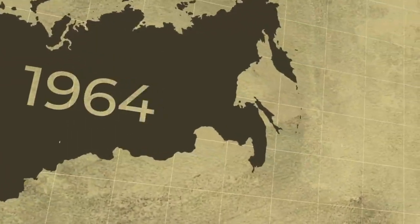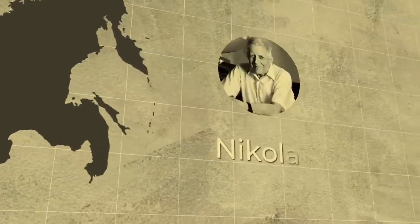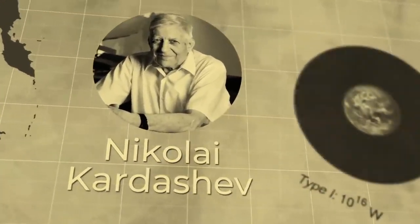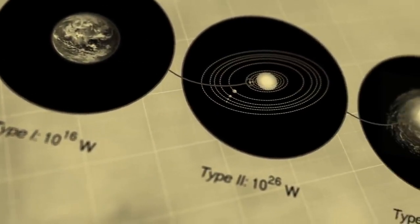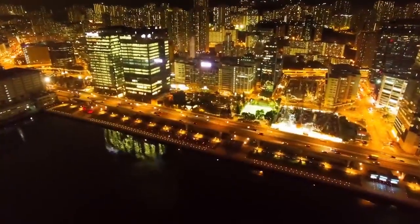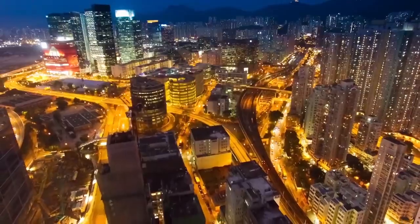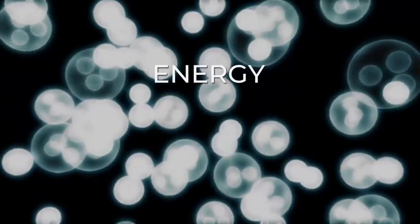Back in 1964, the Soviet scientist Nikolai Kardashev created a scale that classifies global civilizations according to their level of development. He determined that the progress of society depends on two things: energy and technology.